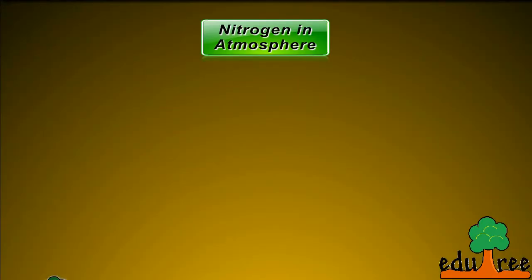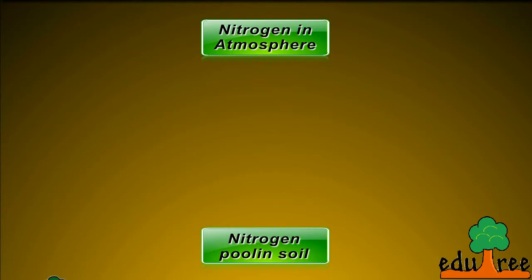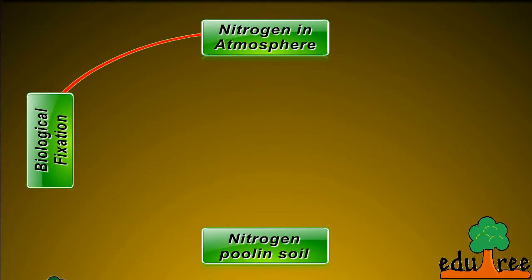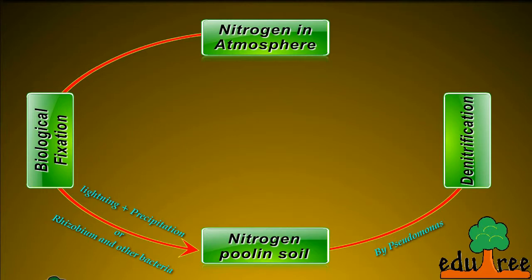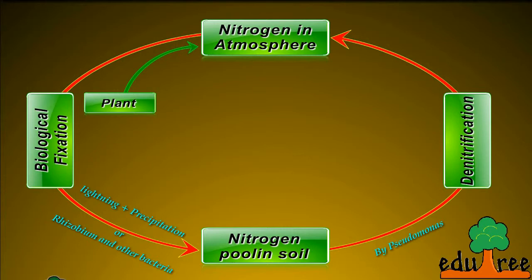Nitrogen is available in the atmosphere in its elemental form. Its transfer to the soil occurs due to biological fixation, then by lightning and precipitation, and then by Rhizobium and other bacteria. Nitrogen, once it reaches the soil, is denitrified by the microorganism Pseudomonas. Free-living soil bacteria such as Pseudomonas reduce nitrate ions in the soil into gaseous nitrogen, which returns to the atmosphere. Similarly, plants also return nitrogen to the atmosphere through burning of fuel.